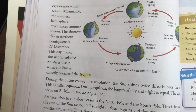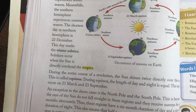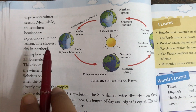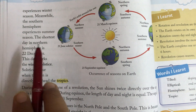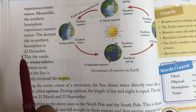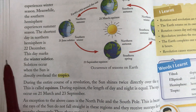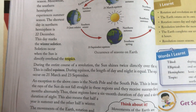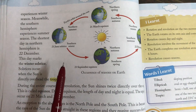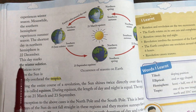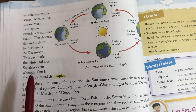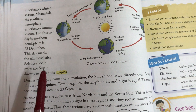The shortest day in the Northern Hemisphere is 22nd December. उस दिन ठंड भी ज्यादा होती है और दिन भी काफी छोटा होता है। This day marks the winter solstice.